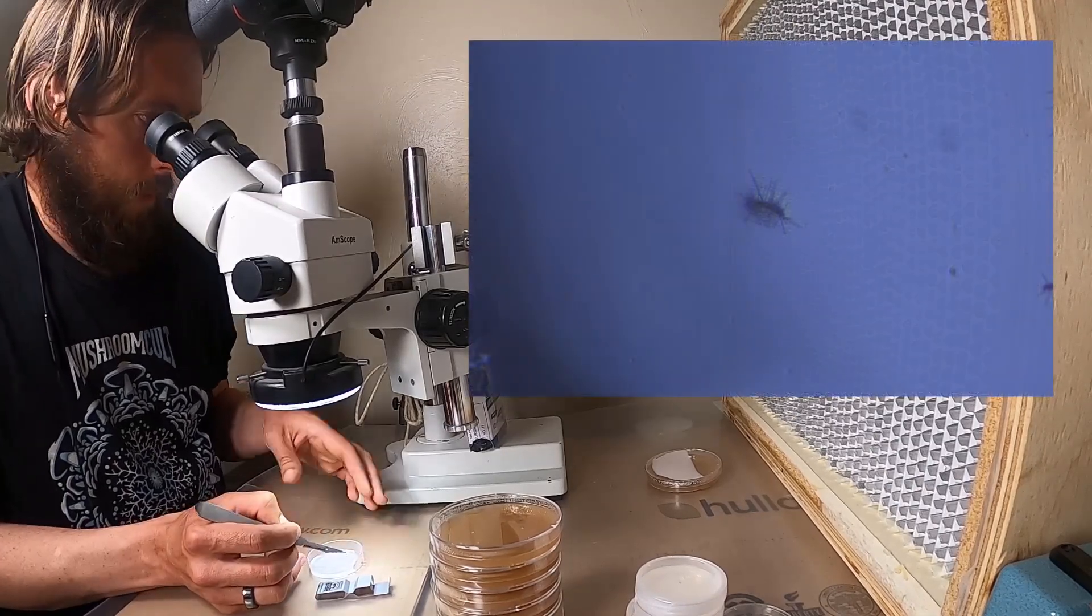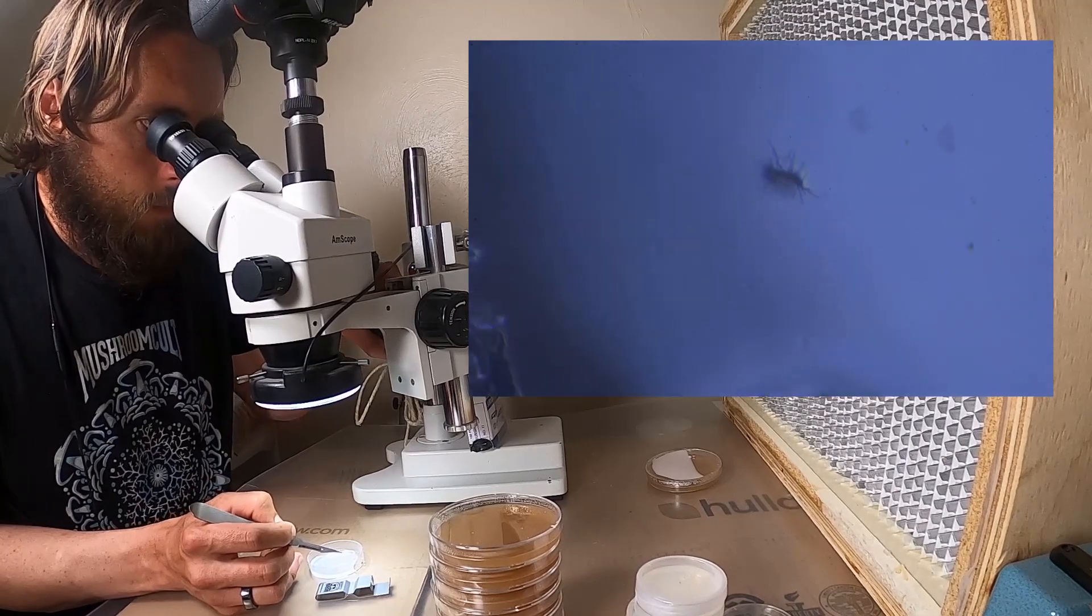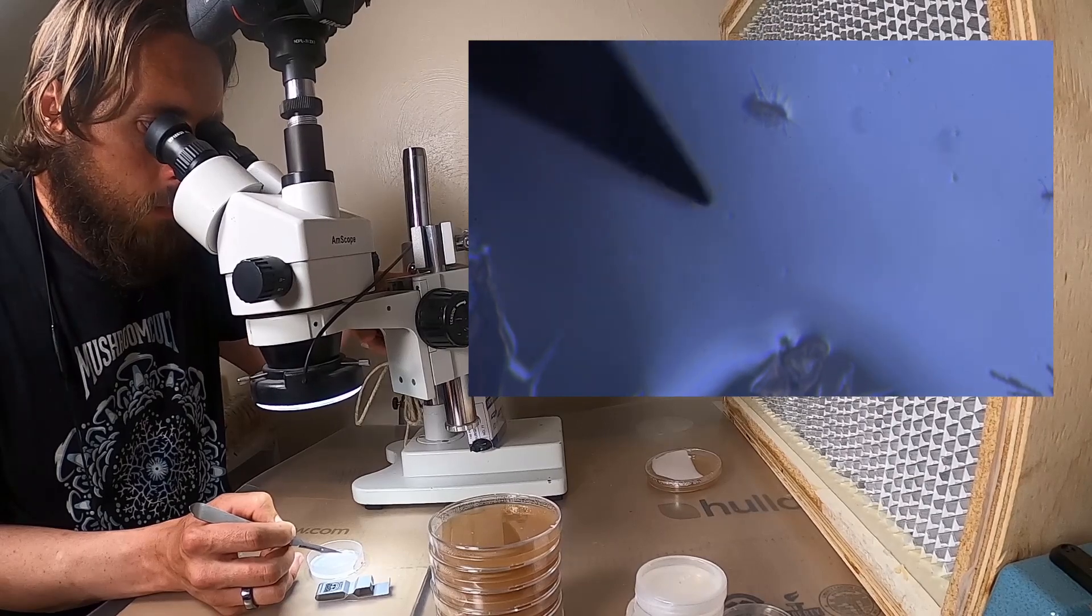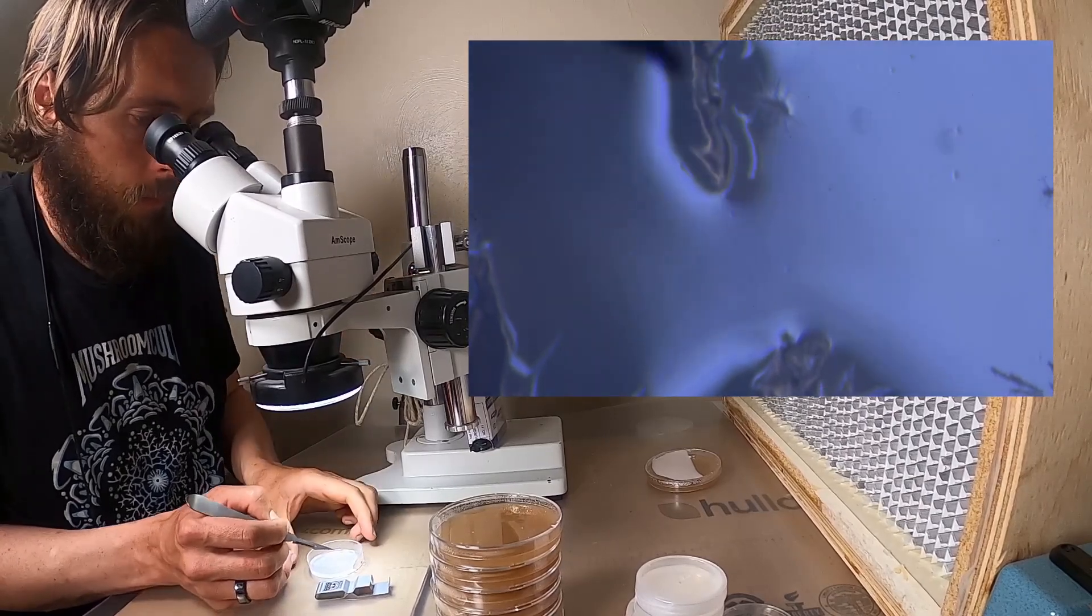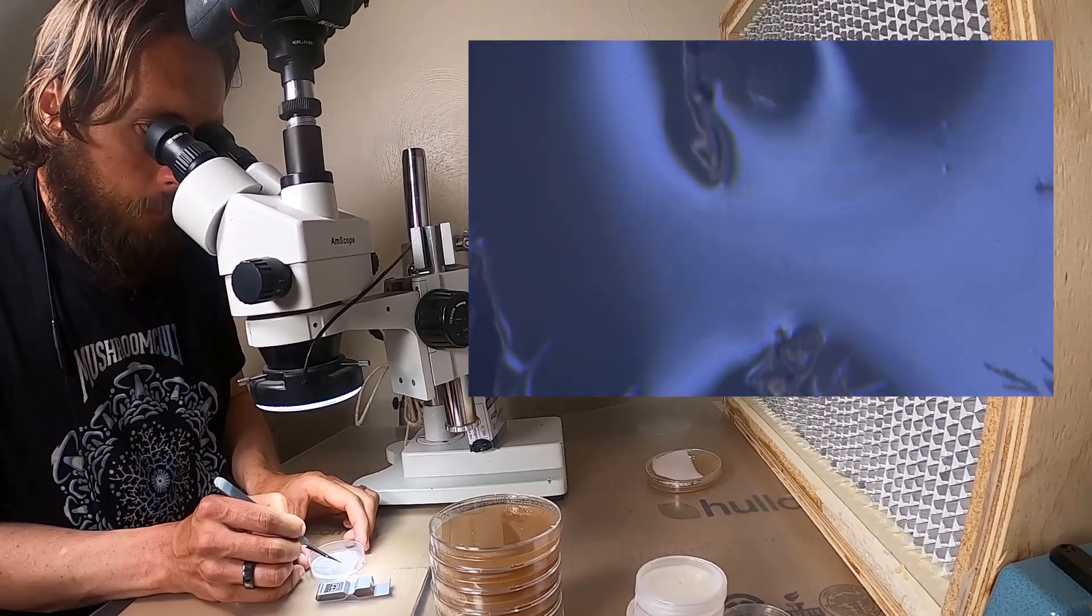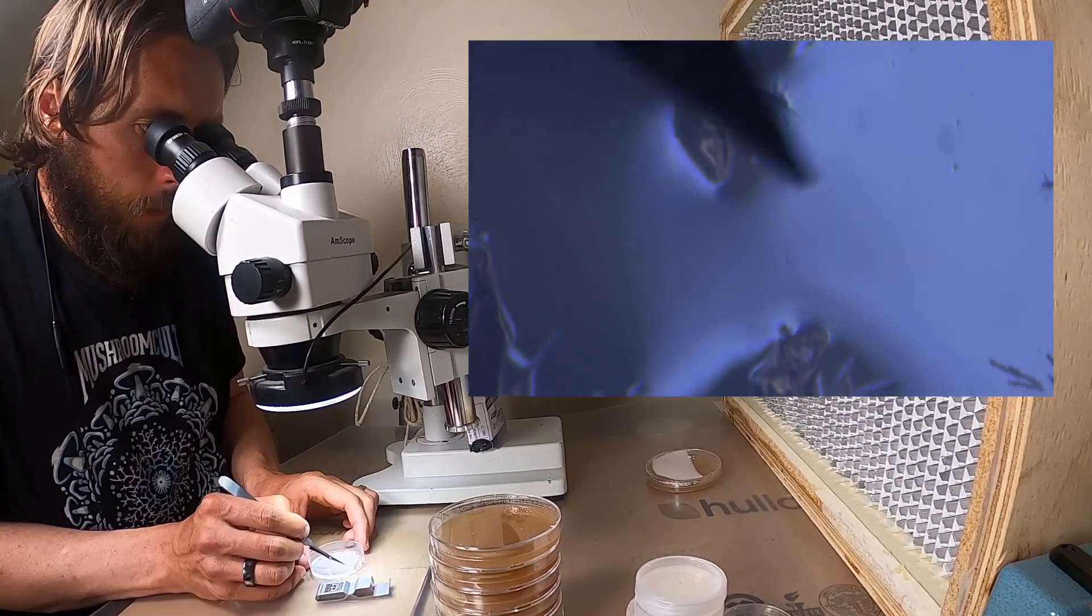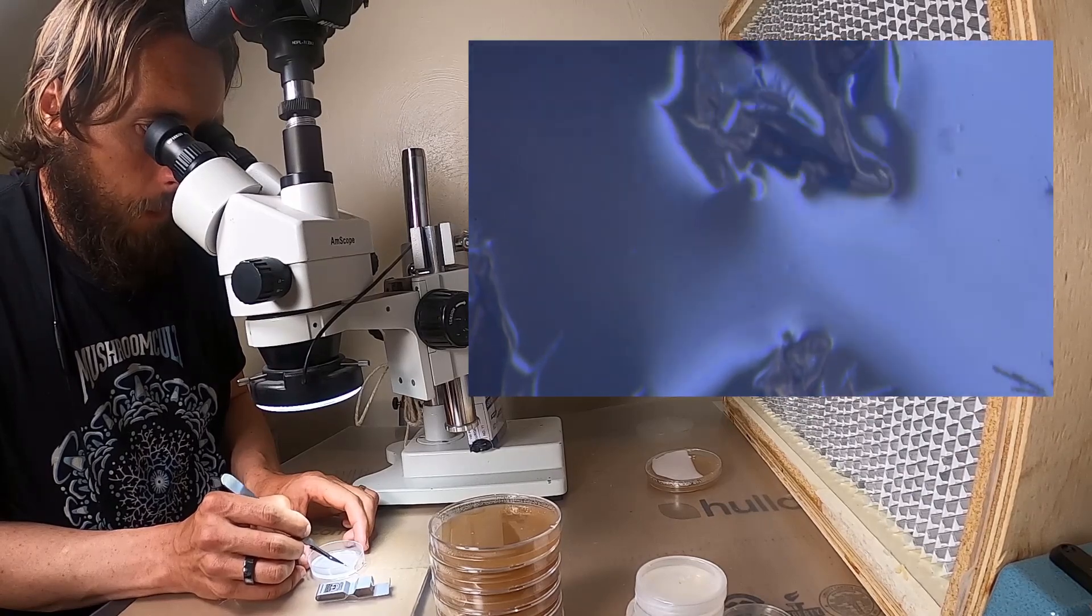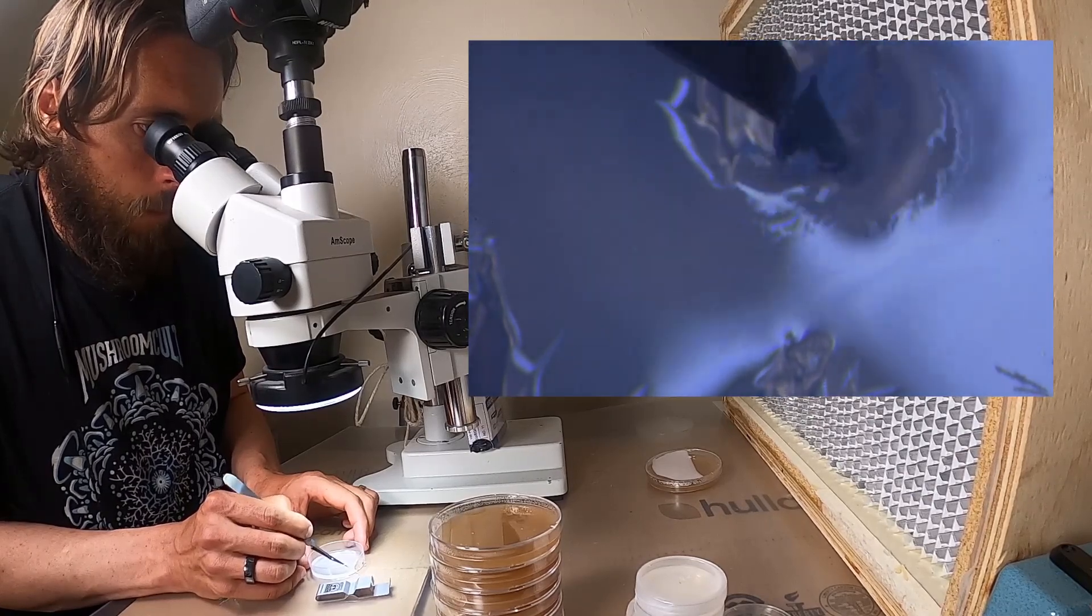Here you can see what the microscope can see. It looks like I found a single ascospore that has plenty of room because it's kind of difficult to navigate in such a small space. So I'm just trying to make a little square around it, try not to damage it, and then lift it out.